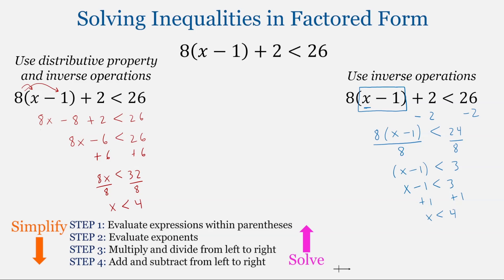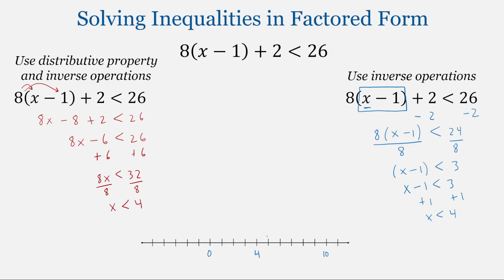We solved the inequality in two different ways, but it's the same inequality so the answer will be the same. If they're not, something went wrong in one or both methods. When we graph this solution, we're going to have an open circle at 4, because 4 is not part of the solution, but all numbers less than 4 are, so we shade everything to the left of 4.